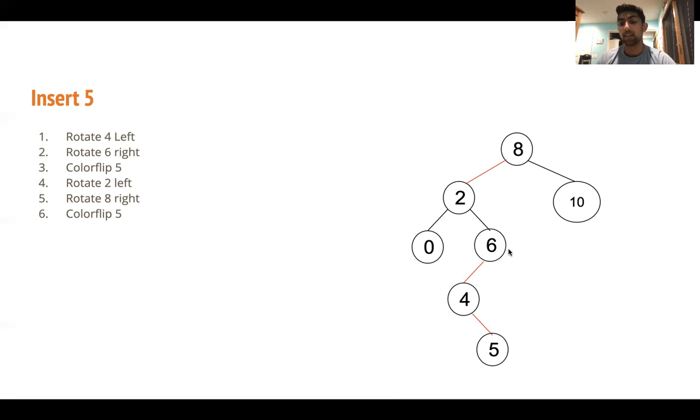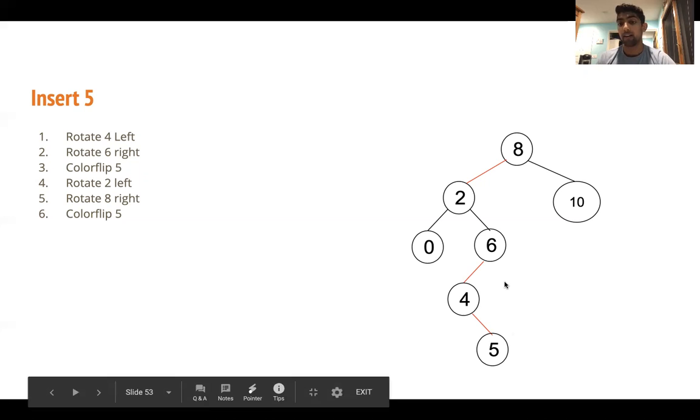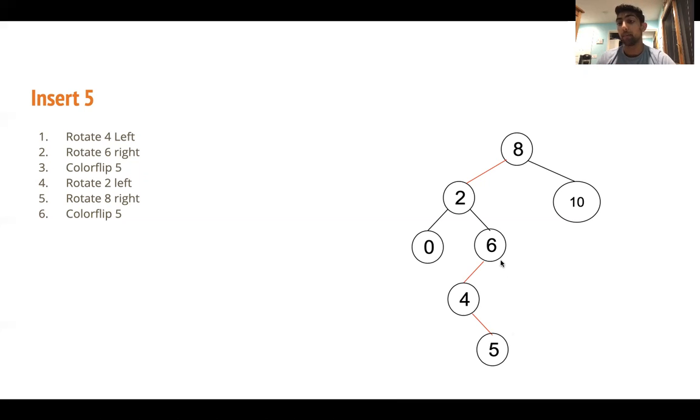So we see here that in the corresponding 2-3 tree, this 4-6-5 node is overstuffed. So to deal with an overstuffed node, what we do is we take the median element and we push it to the layer above. The problem is that in order to do this pushing of the median element, we need to have a color flip. And the color flip can only happen in a set configuration of the tree.